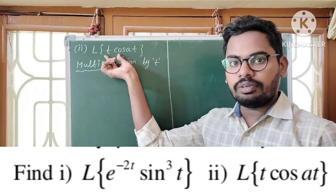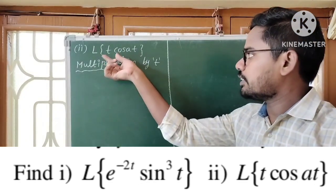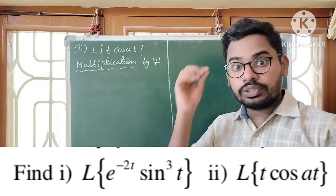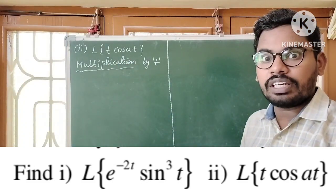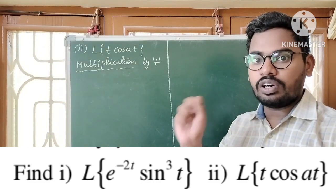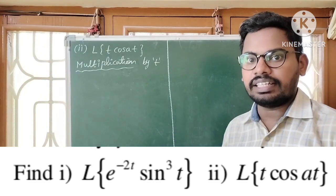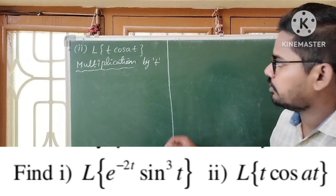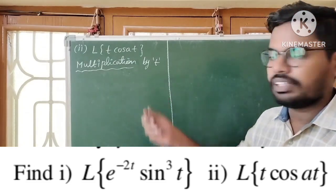There is one more method to solve the Laplace transform of T·cos(AT) — using complex numbers, specifically E^(iAT), which equals cos(AT) + i·sin(AT). We can solve it using that method also, but this method is very simple.